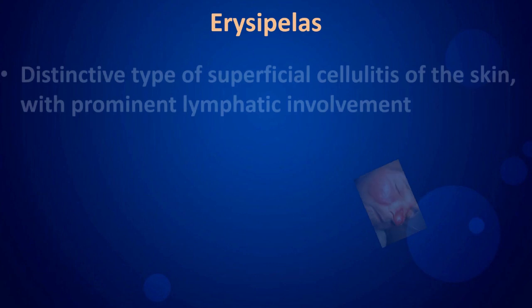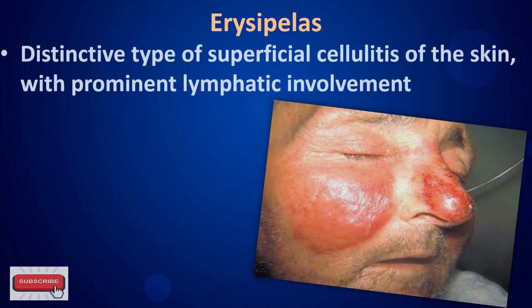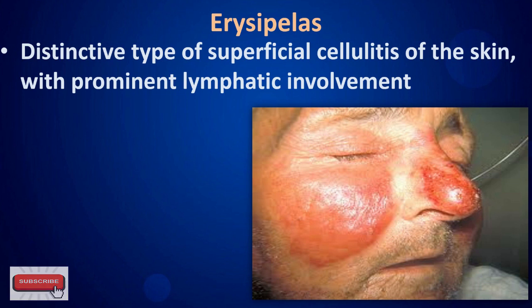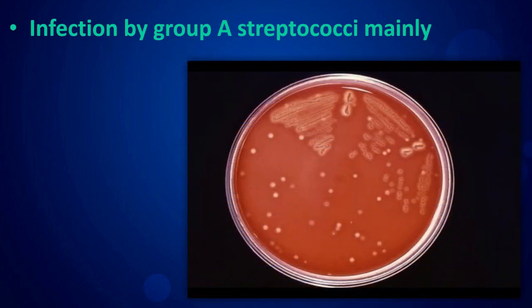Erysipelas is a distinctive type of superficial cellulitis of the skin with prominent lymphatic involvement. It is caused mainly by infection with Group A Streptococci.